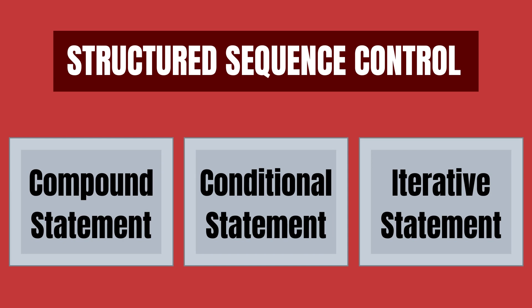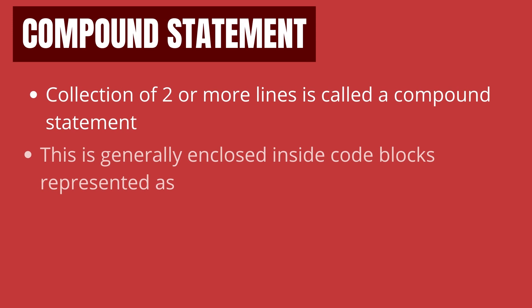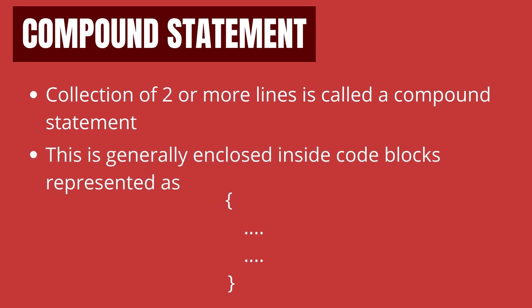And lastly, let's look at structure level sequence control. A structure level sequence control is categorized in three types: namely compound statement, conditional statement, and iterative statement. This type of sequence control generally differs from the above two as we will be dealing with a block of code, which is also called a structure. The first one is compound statement — a connection of two or more related statements is called a compound statement, and these are enclosed in curly braces, thus forming a code block. This provides an elegant way to modularize your code and put together various interdependent parts in a single functional block.